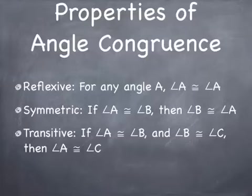The symmetric property says if angle A is congruent to angle B, then angle B is congruent to angle A. And the transitive property states that if angle A is congruent to angle B and angle B is congruent to angle C, then angle A is congruent to angle C.